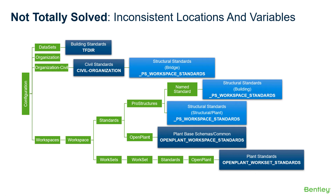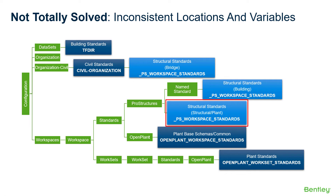However, this problem is not totally solved. Each of the products has inconsistent locations for the same portions of the configuration. This is evident in the ProStructures portions, where that is shared across the bridge products, the building products, the plant products, and ProStructures itself.